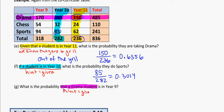The hint in this case is that I have a drama student. So what is the probability that a drama student is in year 9. So my total number of drama students is 485. And my year 9 drama students is 170. So 170 out of 485 gives us 0.3505.